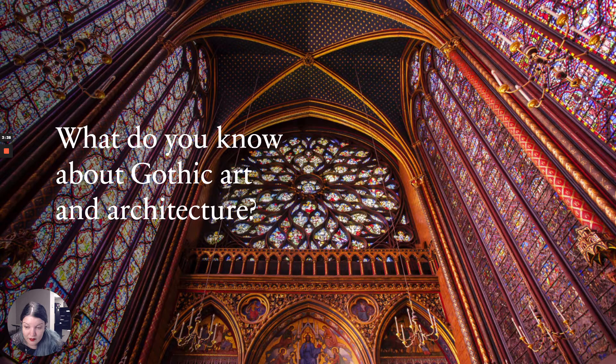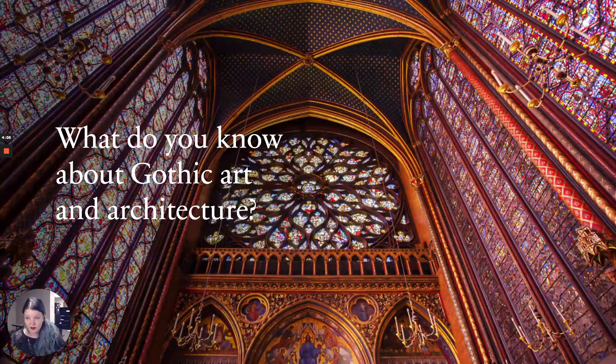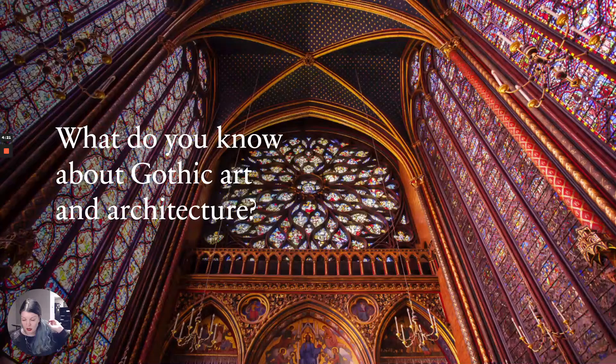I record these lectures for my art history class and other people watch them as well. Vasari's assessment of Gothic art was very negative — he described it as barbarous and monstrous. He was wrong about who was making it, and his opinion has not stood the test of time. Throughout art history, many terms for different periods started out as negative criticisms. For example, Fauvism in the 20th century: fauv means wild beast in French, coined by a critic describing the painting movement, and that name stuck.